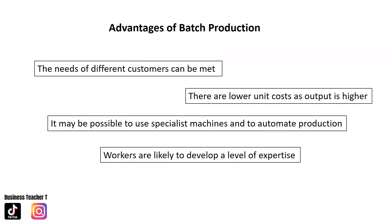Advantages of batch production: the needs of different customers can be met by producing batches of different goods. There are lower unit costs as output is higher. It may be possible to use specialist machines and to automate production, saving costs. Workers are likely to specialise in one part of the process, developing expertise, which may lead to increased productivity.